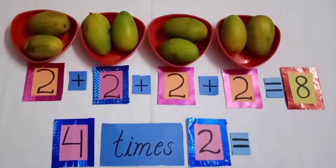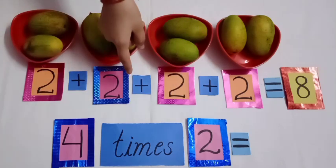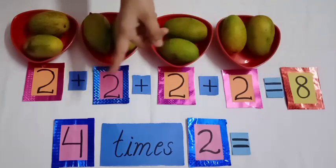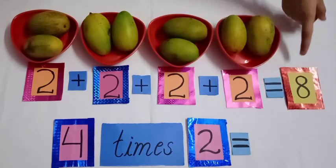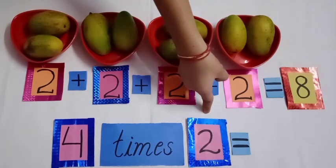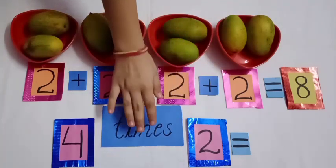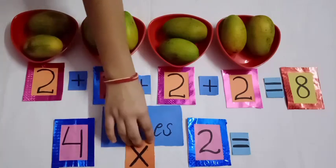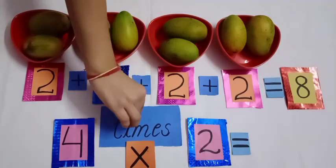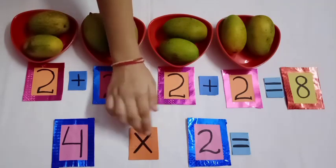Students, to count all the mangoes, we added 2 for 4 times, so there were 8 mangoes in all. By adding 2 for 4 times, we got 8. 4 times 2 — 4 times 2 means 4 multiplied by 2. Here we can use the sign of multiplication in the place of times.